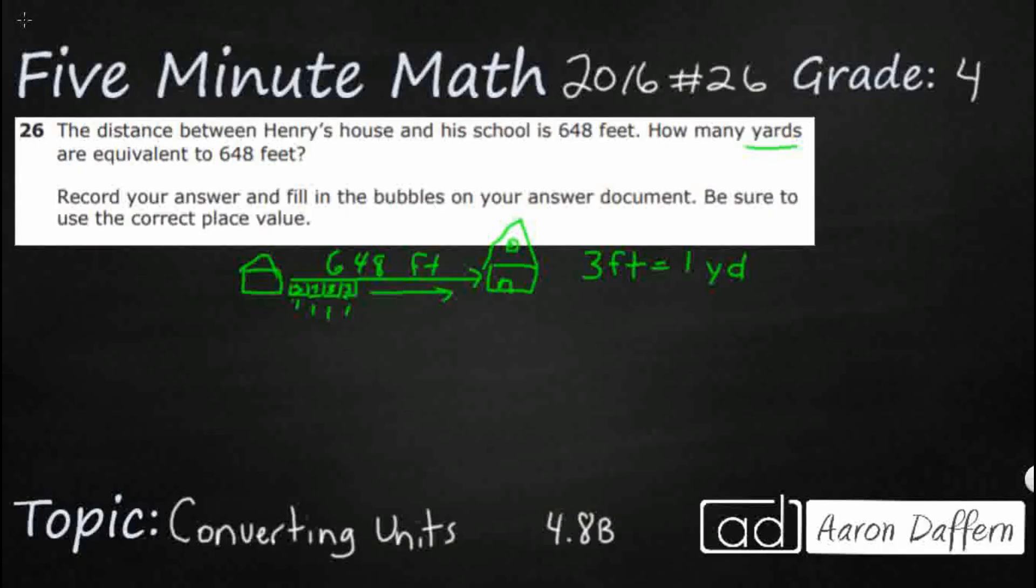So that almost looks like a part, part, whole. Let me separate that for us here. So we've got 648, that's our total. And then really we're just looking for how many sets of 3 because that's the conversion we need. 3 feet equals 1 yard. How many sets of 3 can we get out of that 648? So that's what our strip diagram will look like.